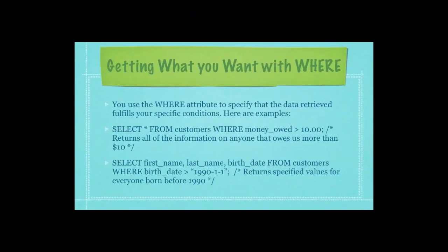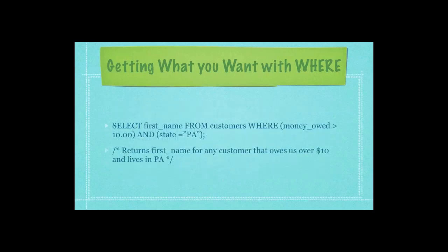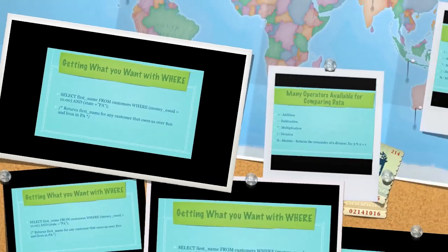You can use the where attribute to specify that the data retrieved fulfills your specific conditions. In this first example I'm returning all information on anyone that owes us more than $10 — select star from customers where money owed is greater than $10. In another example I'm selecting first name, last name, and birth date from customers where birth date is greater than 1990 January 1st. You can also return the first name for any customer that owes over $10 AND lives in Pennsylvania, using the logical operator AND.